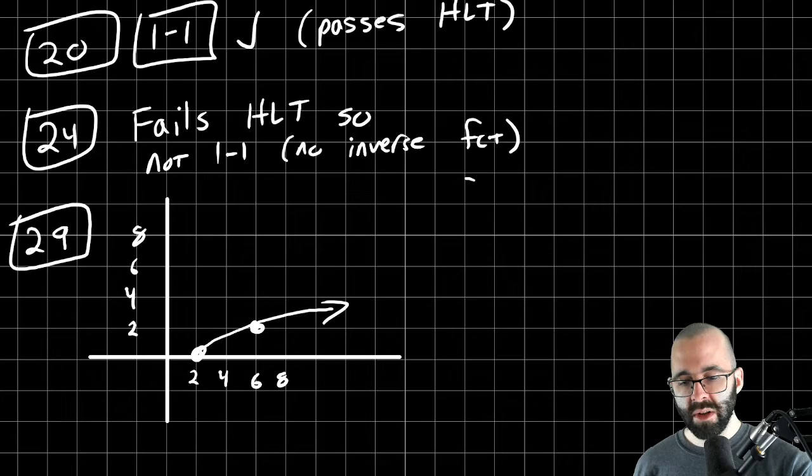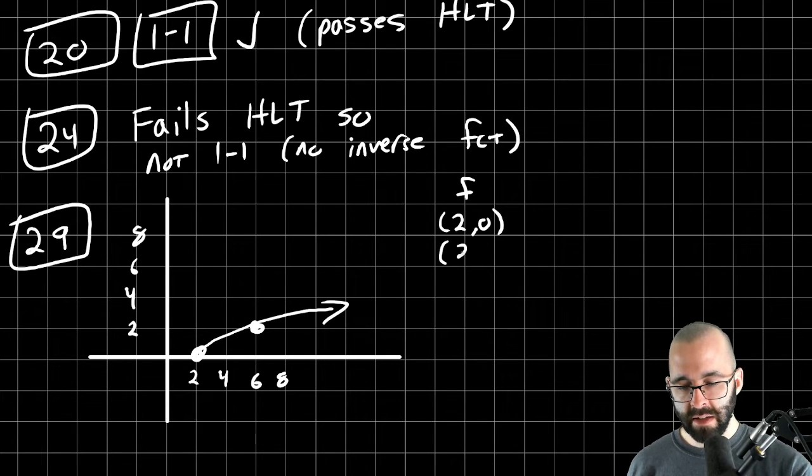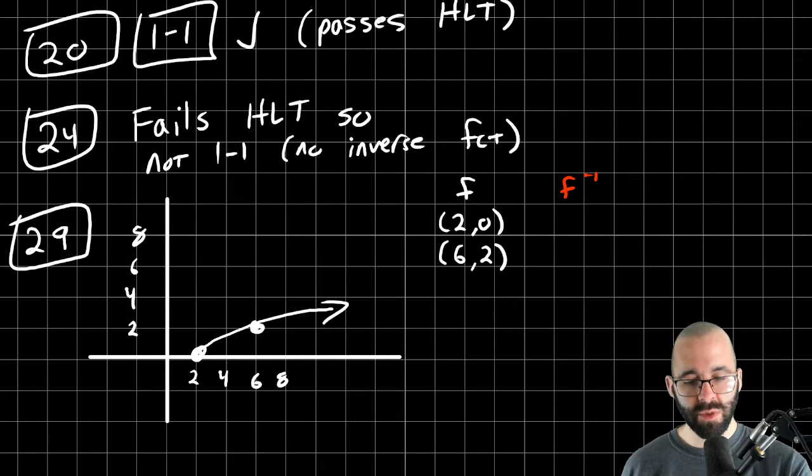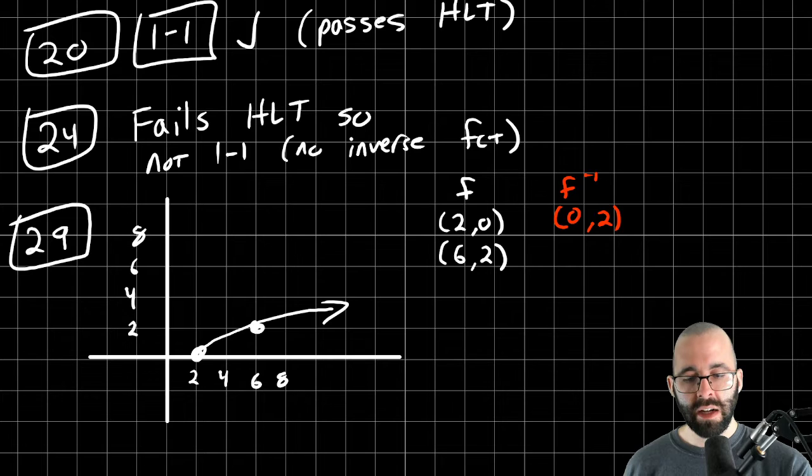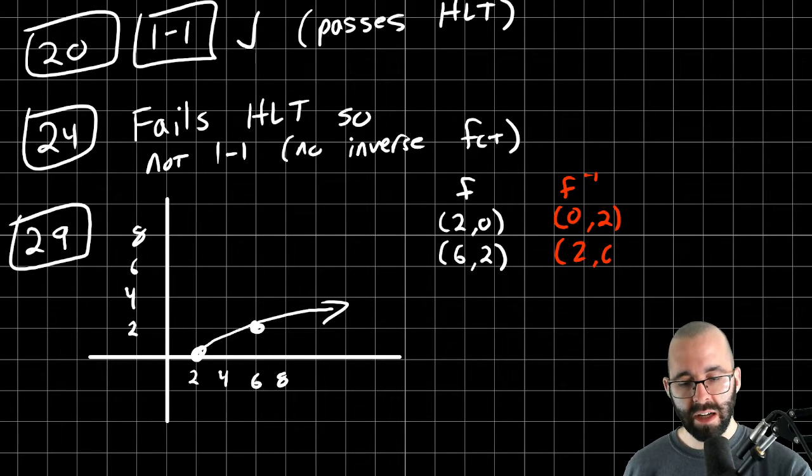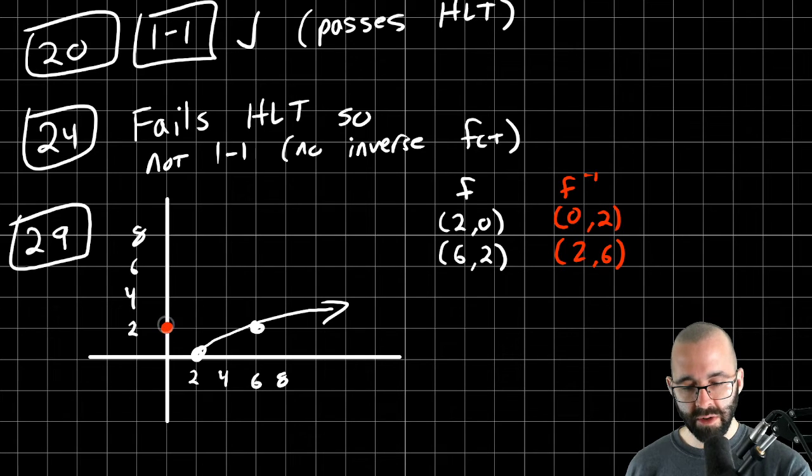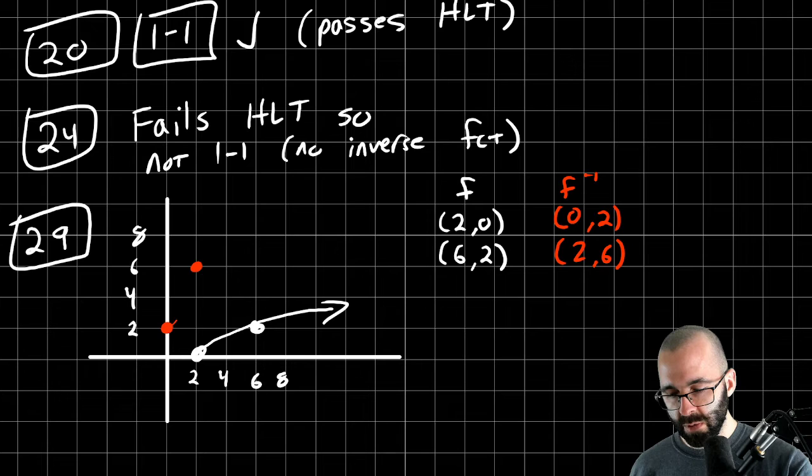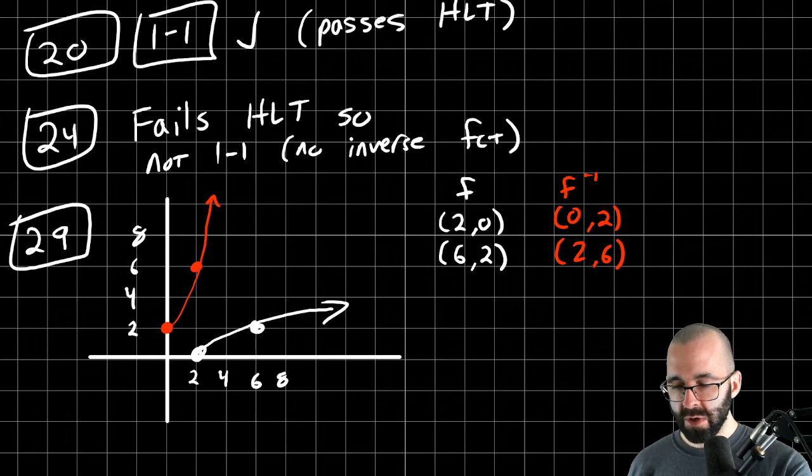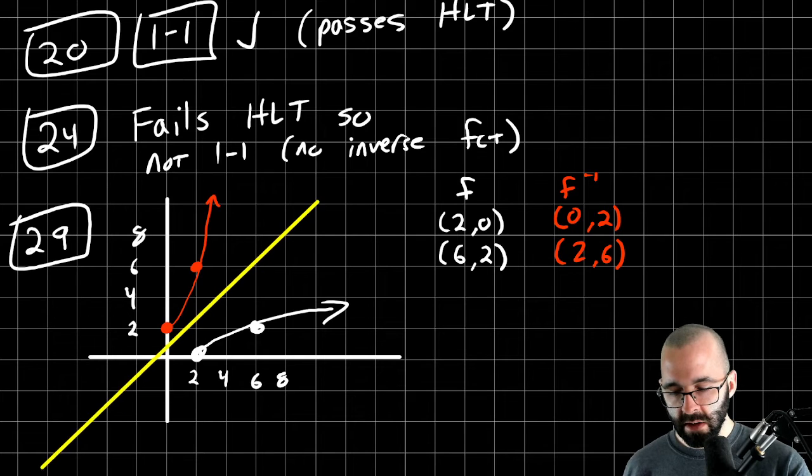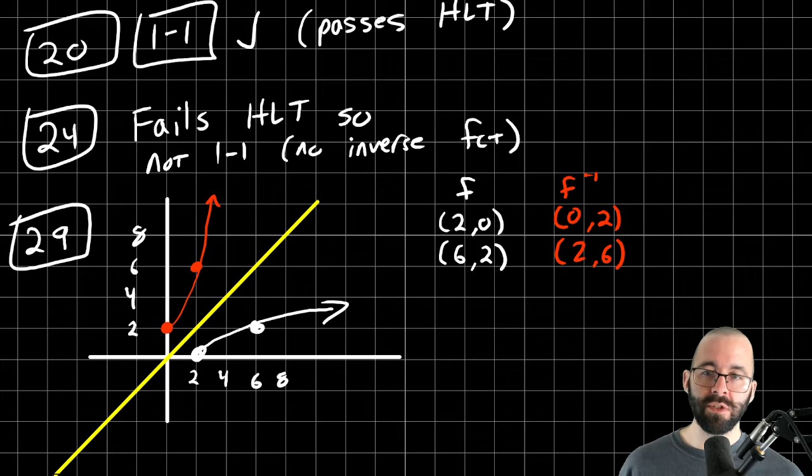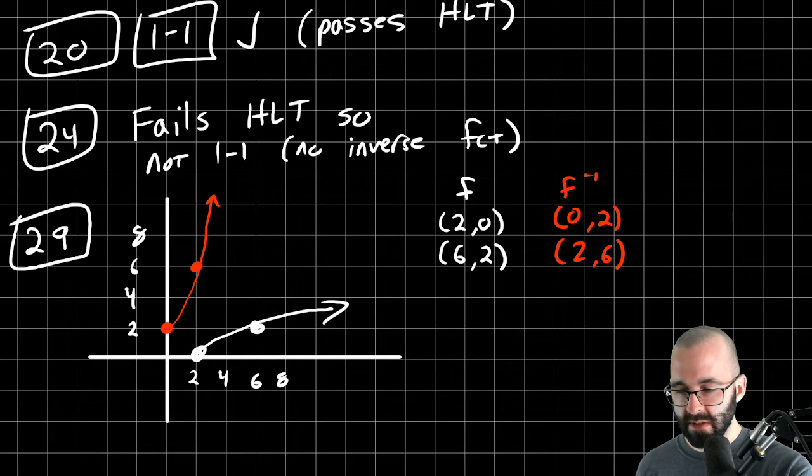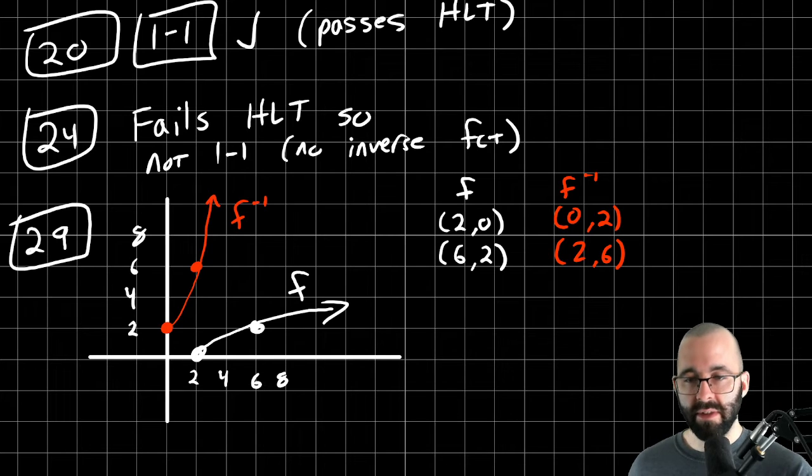So to graph the inverse, we just look at all the points for F. Two, zero and six, two. Those are the only real easy points that we have for F. What are the corresponding points for F inverse? Just switch all the inputs and the outputs. Switch the X's and the Y's. Two, zero becomes zero, two. Six, two becomes two, six. And graph those points. Zero, two is right here. Two, six is right here. Draw the same shape. And hopefully, if we draw a diagonal line Y equals X, the red and the white should be the same thing, just reflected around that yellow line. And they are. So that is F inverse, and this is F. Ta-da!